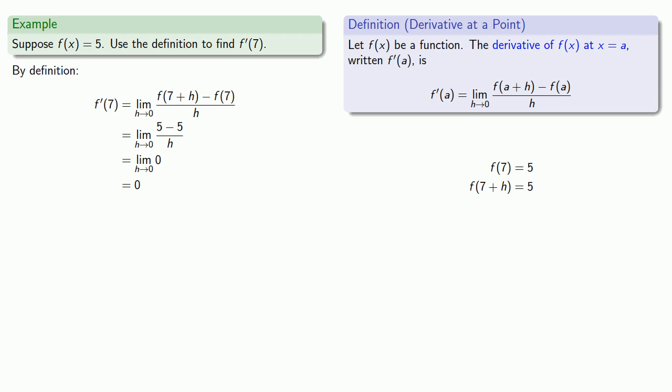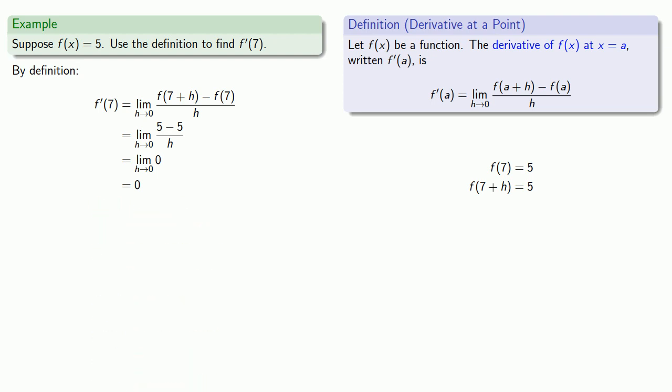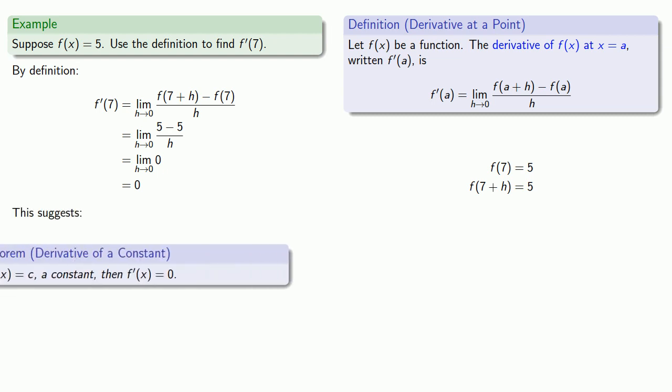Now, what would happen if f were equal to a different number — say, 11, or pi, or the square root of 7? It should be clear that regardless of the value that f equals, nothing important changes and the derivative is always going to be 0. This suggests an important result: if f(x) equals c, a constant, then the derivative is equal to 0.